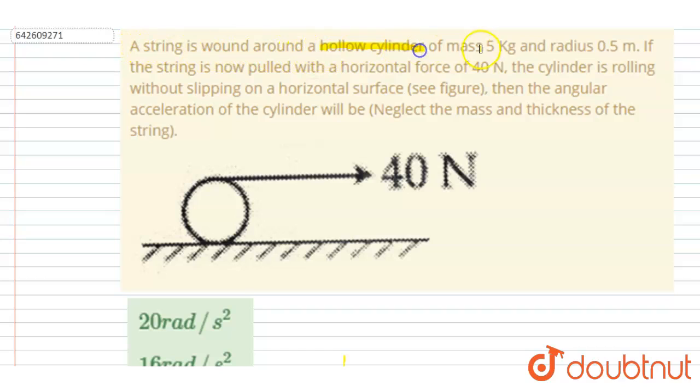A hollow cylinder of mass 5 kg and radius 0.5 meter. If the string is now pulled with a horizontal force of 40 newton, you can see the diagram.